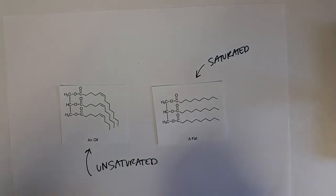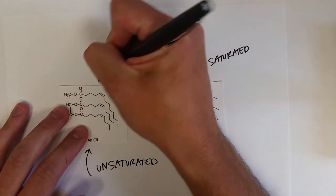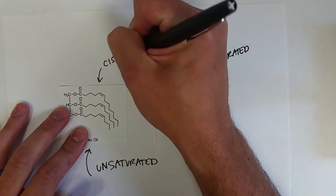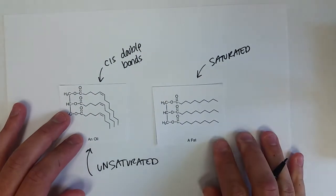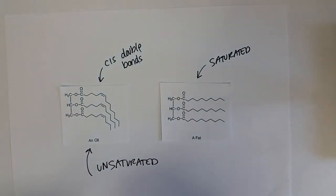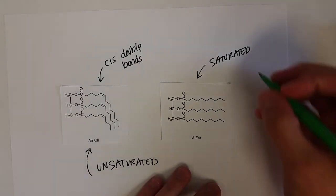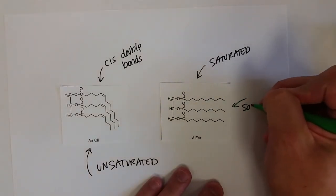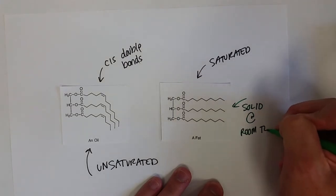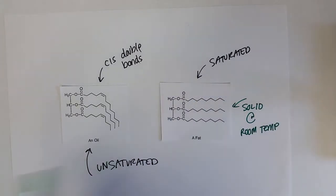This is an oil with cis double bonds. The big difference between them is that a fat is a solid at room temperature and an oil is a liquid at room temperature.